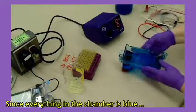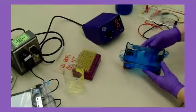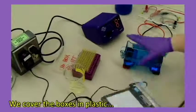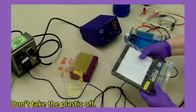Since everything in the chamber is blue, you may not be able to see the bands of DNA yet. We'll use a light box to get a better look. We cover the boxes in plastic to keep the liquid buffer off of them. Don't take the plastic off.